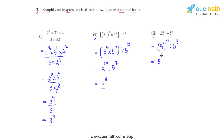So we have 5 raised to 8 divided by 5 raised to 3. Using the quotient law of exponents, we keep the same base and subtract the powers: 8 minus 3 gives 5. So 5 raised to 5 is the simplified answer of the third bit.